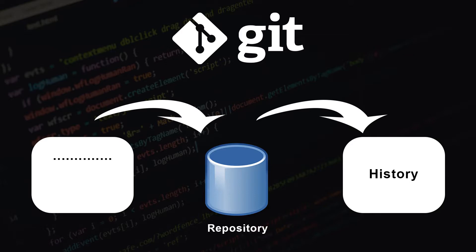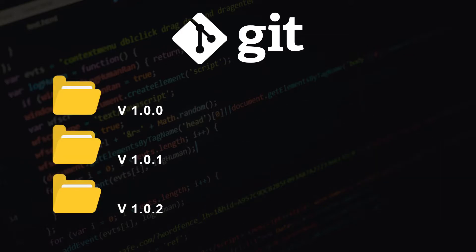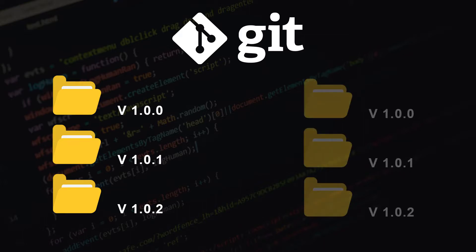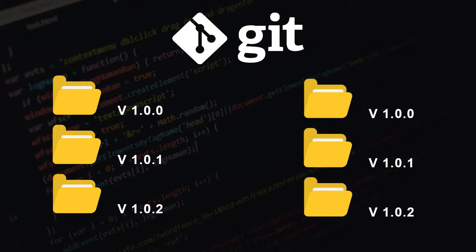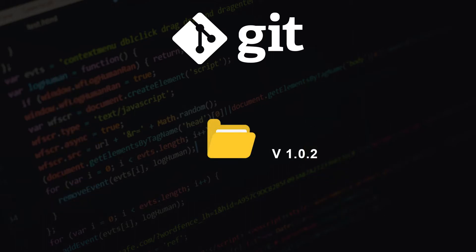Without a version control system, we need to constantly store copies of entire projects in various folders. This is very slow and doesn't scale at all, especially when multiple people have to work on the same project. You have to constantly toss around the latest code by email or some other mechanism and manually merge the changes.